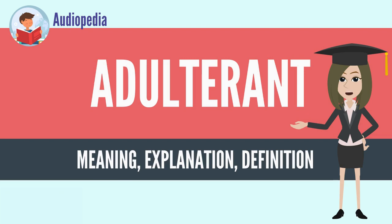The term contamination is usually used for the inclusion of unwanted substances due to accident or negligence rather than intent, and also for the introduction of unwanted substances after the product has been made. Adulteration therefore implies that the adulterant was introduced deliberately in the initial manufacturing process, or sometimes that it was present in the raw materials and should have been removed, but was not.